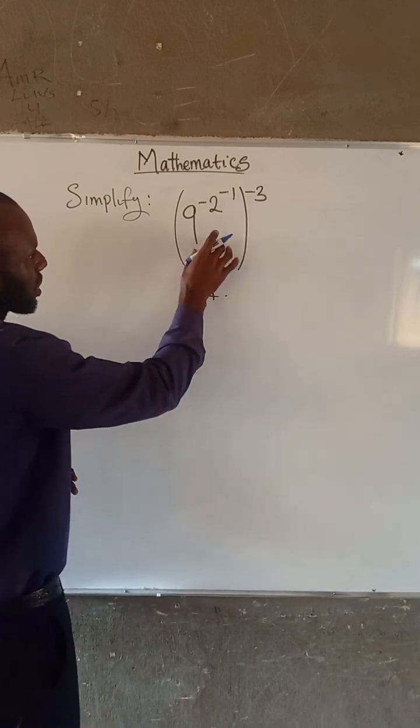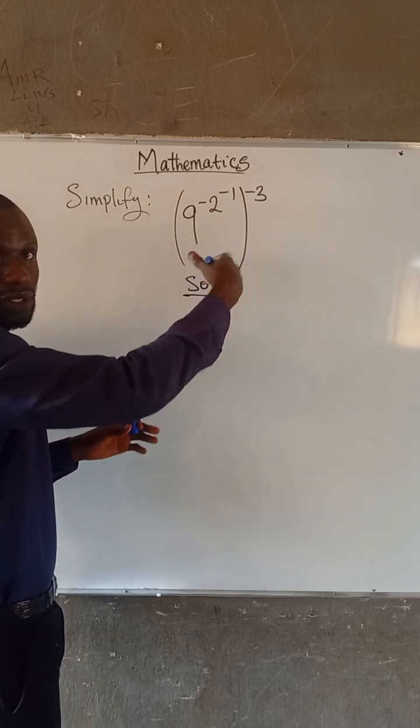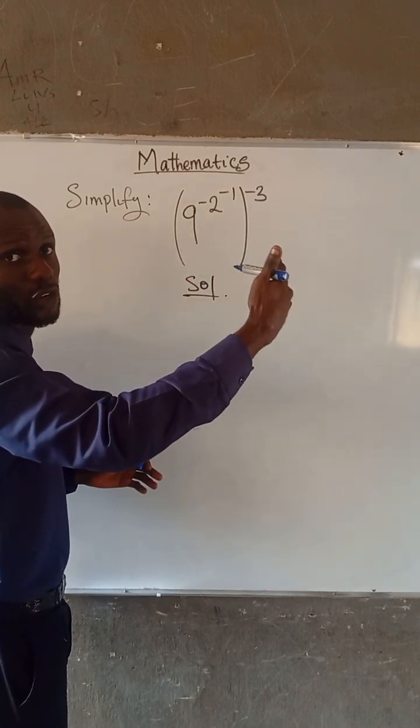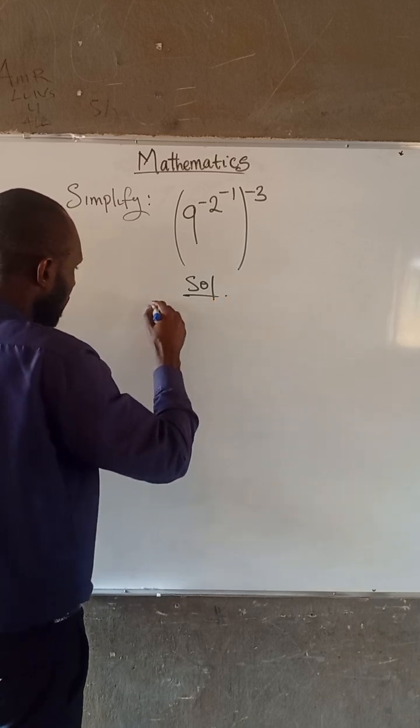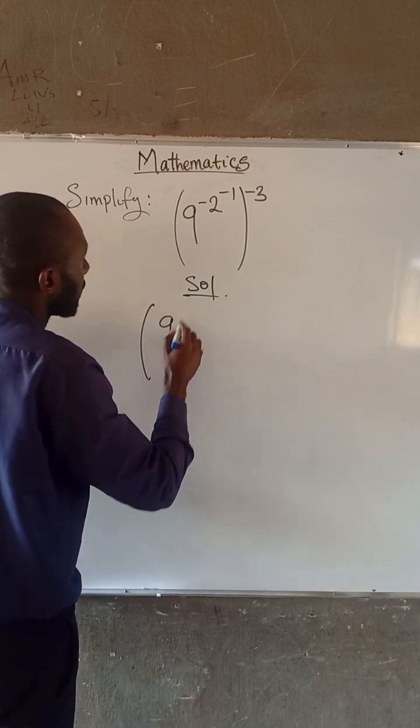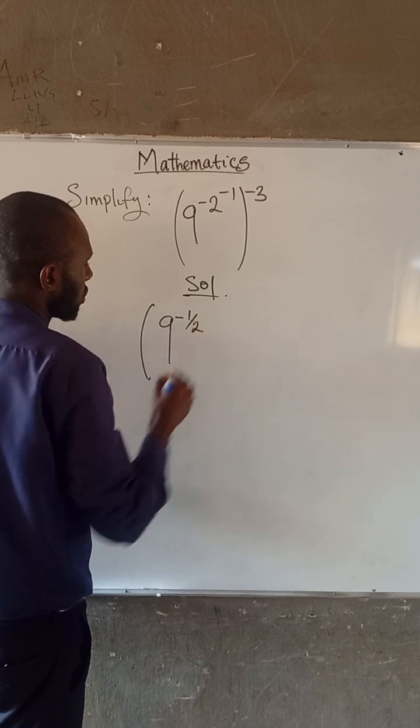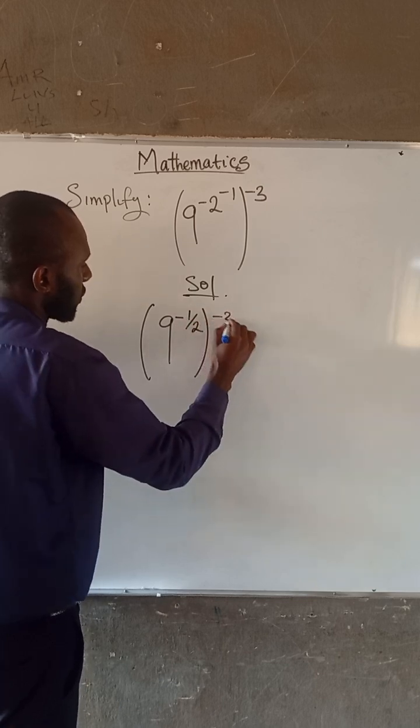The first thing we do is consider inside the bracket because in our BODMAS, brackets come before any other operation. So we have this to be 9 to the minus 1 divided by 2, all raised to the power of negative 3.